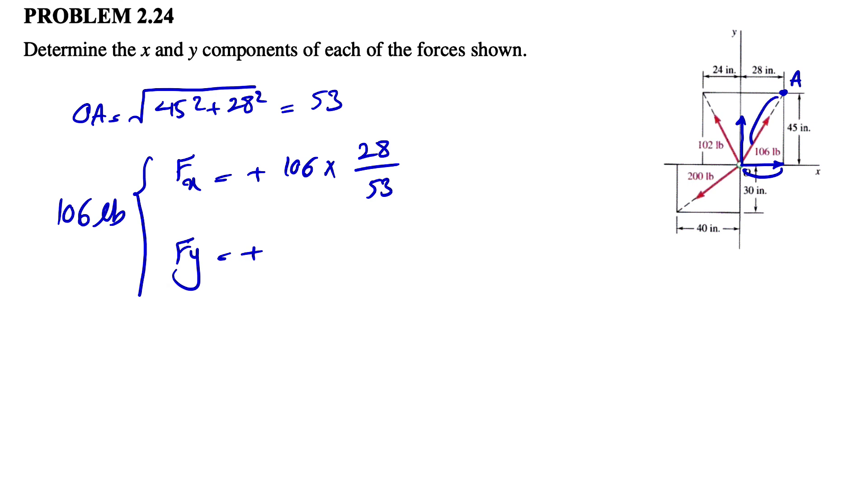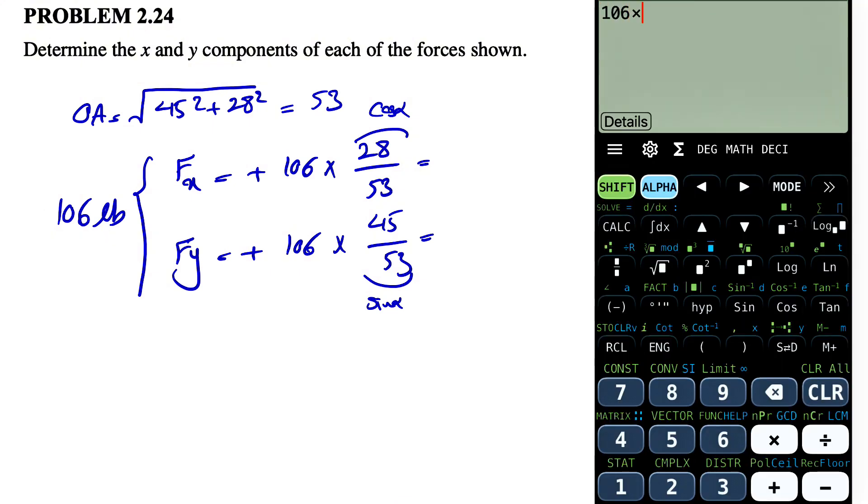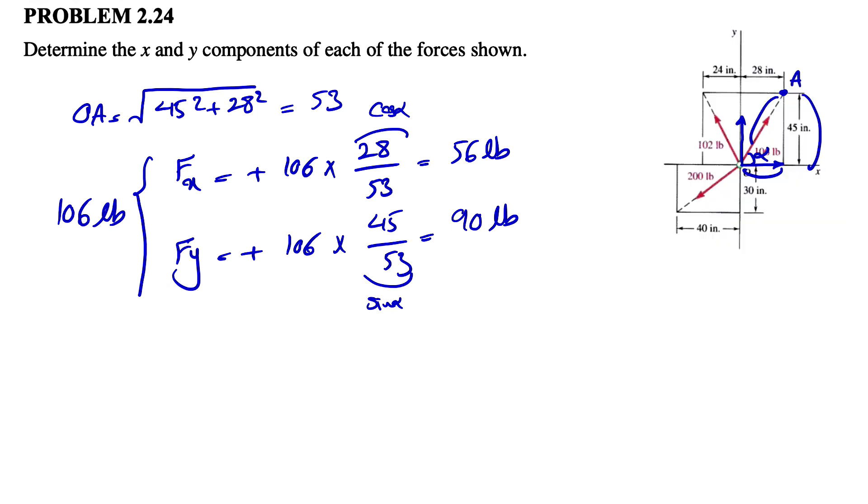And we have the same thing for fy. This time we only have the opposite, which is 45 here over 53. We can go with angle alpha. So basically this was our cosine of alpha and this is our sine of alpha. So we can calculate each of these. So we'll start with the first one, 106 times 28 divided by 53. That's going to be 56 pounds. All the dimensions, all the units are in pounds. And for y, we have 106 times 45 divided by 53. That's going to be 90 pounds. And that was everything for the first one.